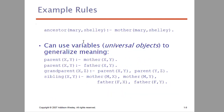Here you can see example rules. For example, ancestor of Mary and Shelly implies mother of Mary and Shelly. We can use variables as universal objects to generalize the meaning. So here you have parent of X and Y, and mother of X and Y — then X is parent of Y if X is mother of Y. Similarly, X is parent of Y if X is father of Y. We also have grandparent and sibling rules — we can use sibling to derive a similar hypothesis.